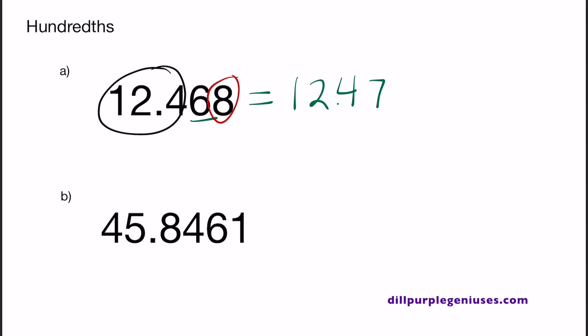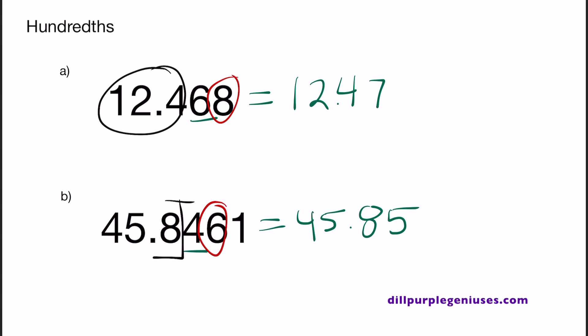In B, we have a big decimal: 45.8461. The number that's in the hundredths place is 4, and to the right of 4 we have 6. Let's write down the numbers that are to the left of 4, so here we have 45.8. 6 is greater than 5, so we need to round 4 up. 4 will now turn into 5, so the final answer to B is 45.85.